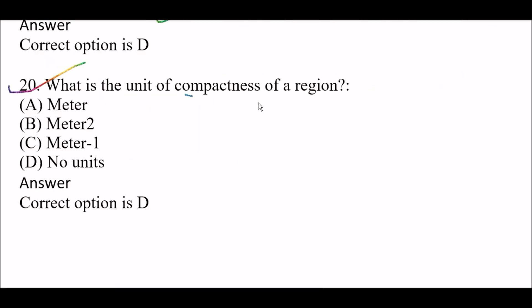Next question: What is the unit of compactness of a region? Option A: meter, Option B: meter squared, Option C: meter to the power of minus 1, Option D: no unit. This is a very important question. The right answer is Option D, no unit. Compactness of a region has no unit.